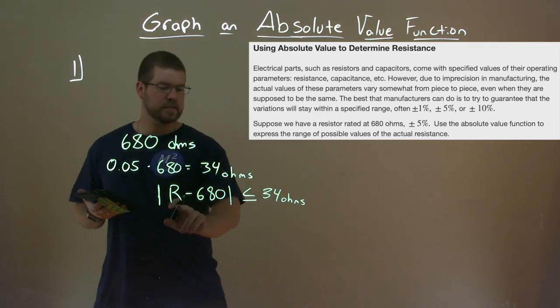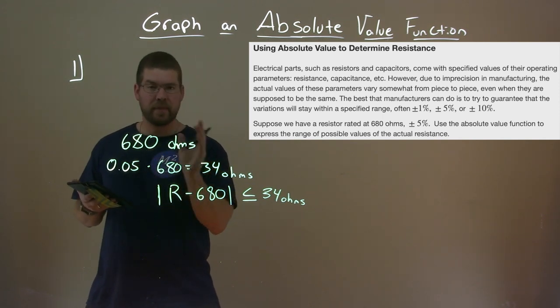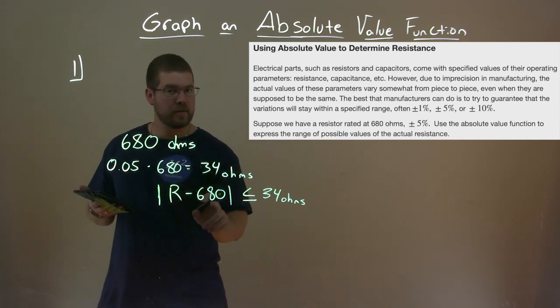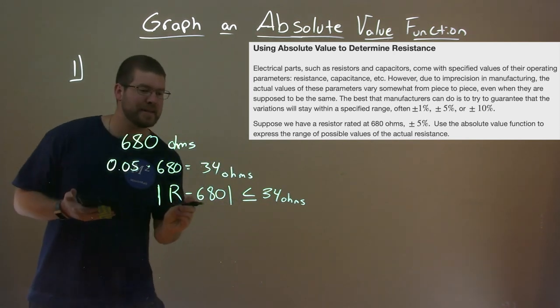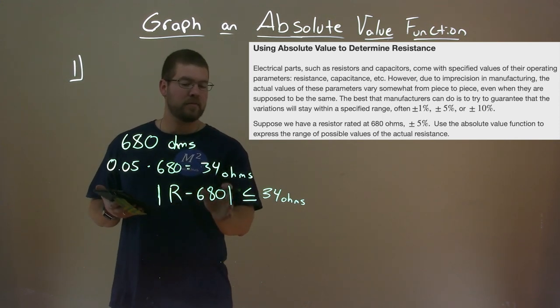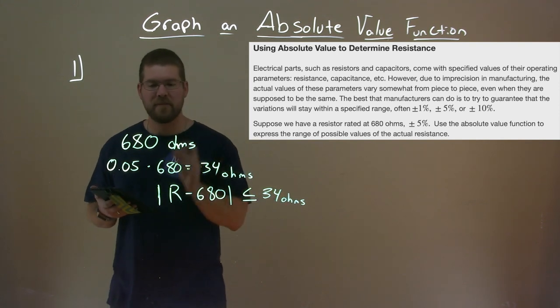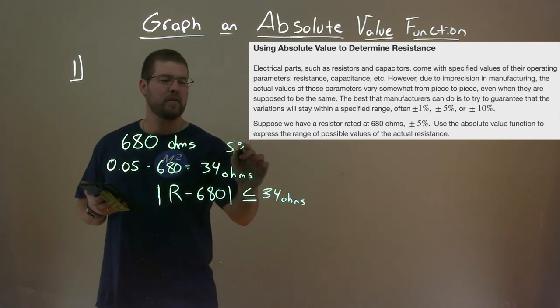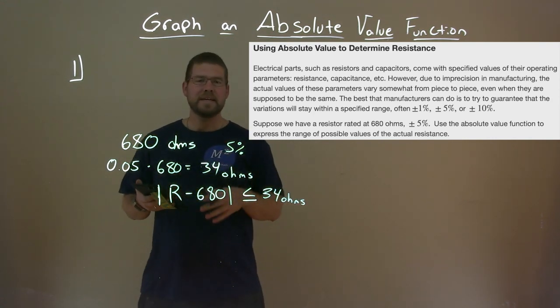680 is like the main target. We subtract that. And those values - that value, whatever it is, has to be, when we take the absolute value, because it can be positive or negative, absolute value makes it positive. That value has to be less than or equal to 34 ohms to be within that 5% that we were looking for. So let me erase this and we'll dive into the next part here.